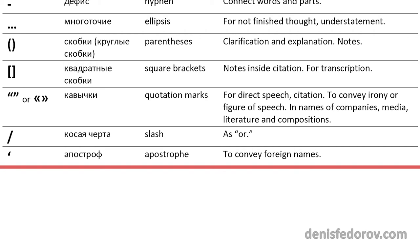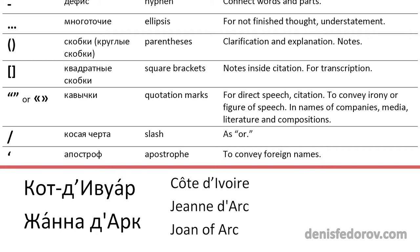Slash — косая черта in Russian — we use the same as in English, to replace OR. Apostrophe — апостроф — we use in Russian to convey names. There is no 'it's' or 'he's' in Russian, so we do not need apostrophe for that. But we use it for names like Кот д'Ивуар or Жанна д'Арк. Mostly in Russian we use apostrophe for names in French, so in real life we do not use apostrophe at all.